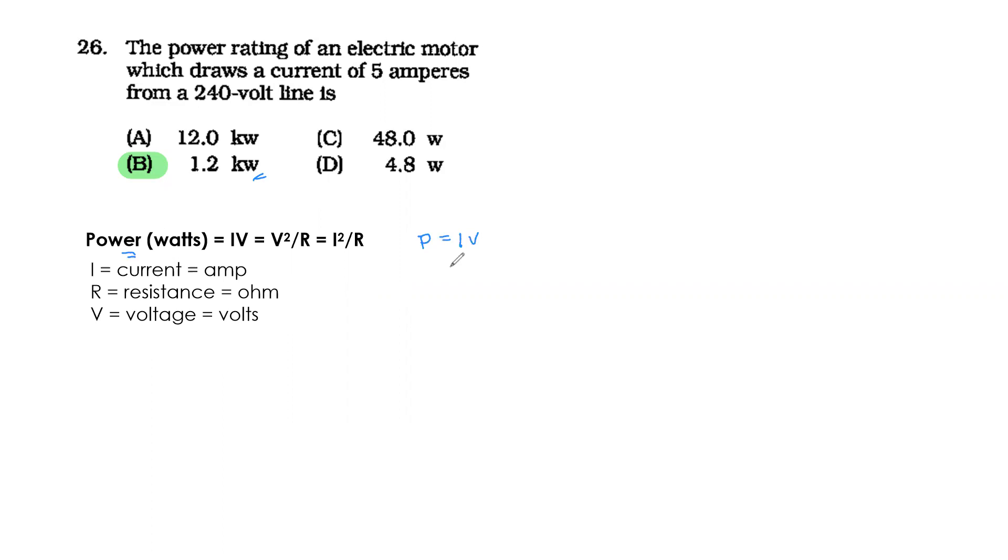Power equals IV: 5 times 240 equals 1200 watts. But that's 1.2 kilowatts. Easy, right? You can get a perfect score on the physics part.